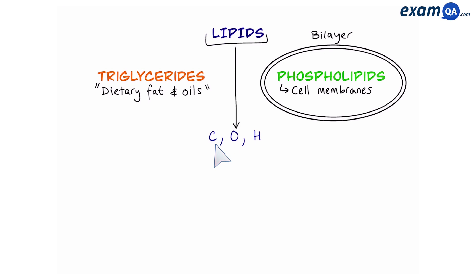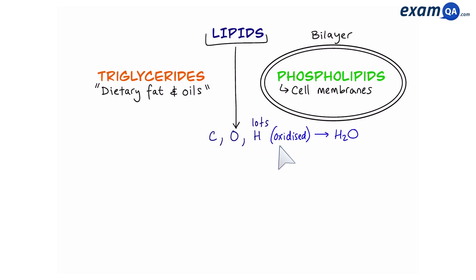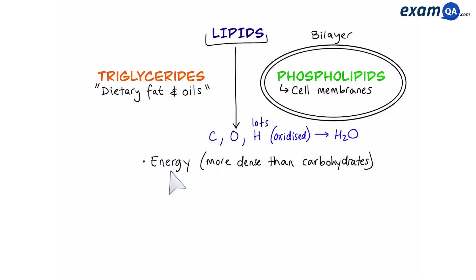Lipids are made of three main elements: carbon, oxygen, and hydrogen, and they have lots of hydrogen. When this is oxidized, that releases lots of water. Lipids provide a source of energy for most cells, and they are more energy dense than carbohydrates. So one gram of lipid can actually release more energy than one gram of sugar.